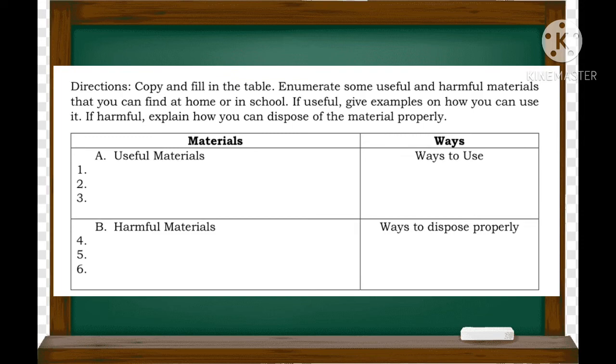Para sa ating additional activities o karagdagang gawain, copy and fill in the table. Enumerate some useful and harmful materials that can be found at home or in school. If useful, give example on how you can use it. If harmful, explain how you can dispose of the materials properly. Sa unang column under materials are useful materials at harmful materials. Maglalagay ka ng tatlong useful materials na makikita sa bahay at eskwelahan at tatlong harmful materials na makikita naman sa bahay at eskwelahan din. Under column 2, ways. Ways to use at ways to dispose. Paano ito ginagamit para sa useful at kung paano naman ito dapat itapon para naman sa harmful.